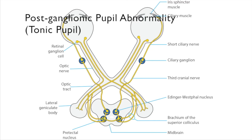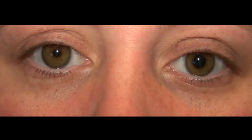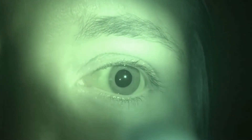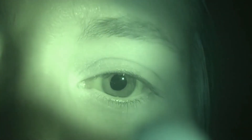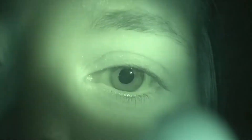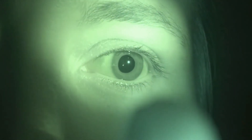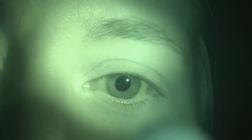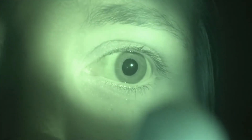Damage to the ciliary ganglion or post-ganglionic axons does not cause ipsilateral ptosis or ocular ductional deficits, but it does cause tonic pupils. Here is an example of a left tonic pupil. This patient has anisocoria. The left pupil is larger than the right pupil. The right pupil constricts normally to direct light. The left pupil is slightly oval and constricts minimally to direct light. It constricts more fully, but slowly, when the patient views a target at reading distance, and dilates slowly when the patient shifts fixation to a distant target.